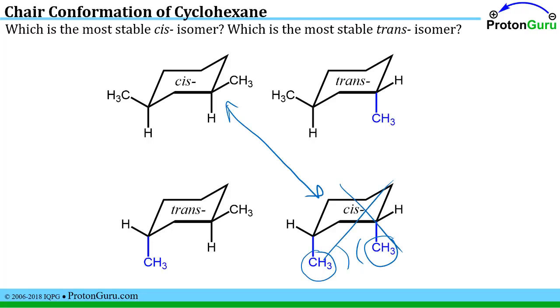This cis molecule has a diaxial repulsion and each of these axial methyls also has a gauche interaction. That's pretty destabilizing, especially since this one has two equatorial methyl groups. So this is the more stable of the two cis isomers.